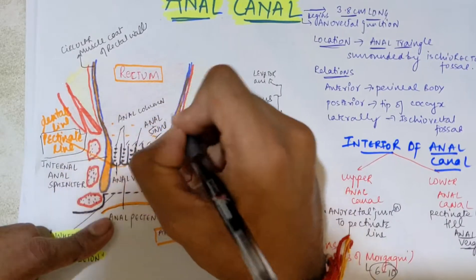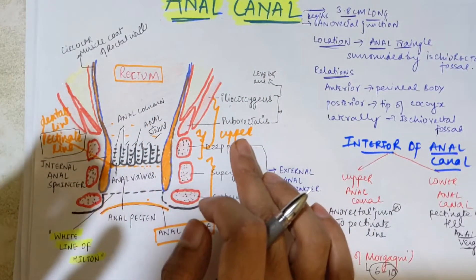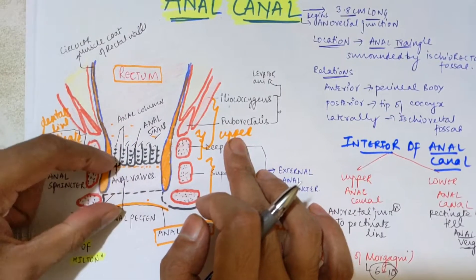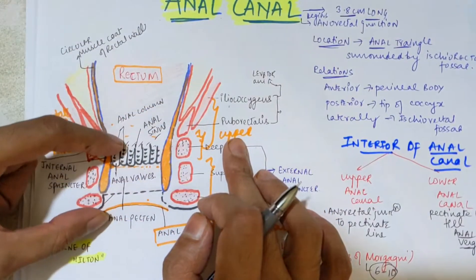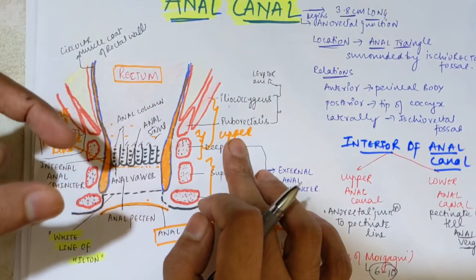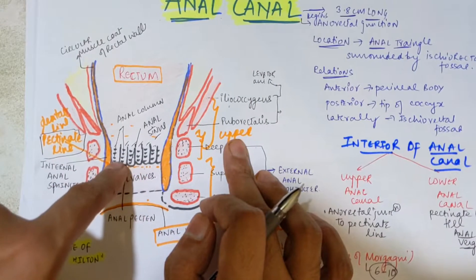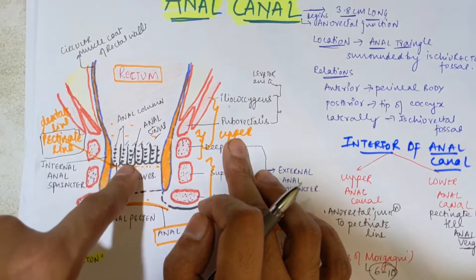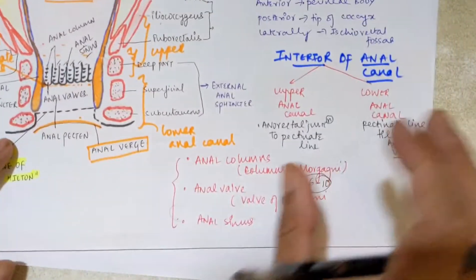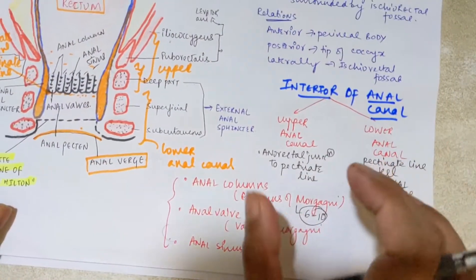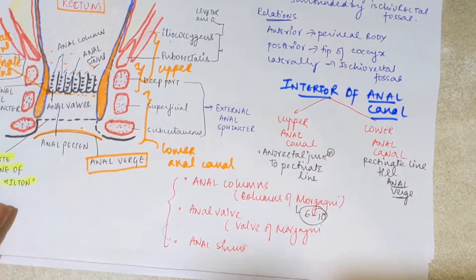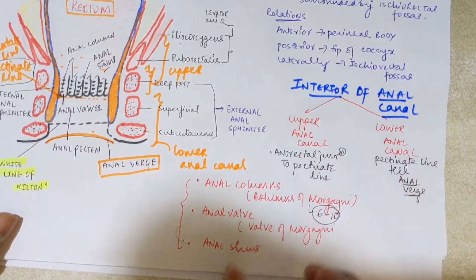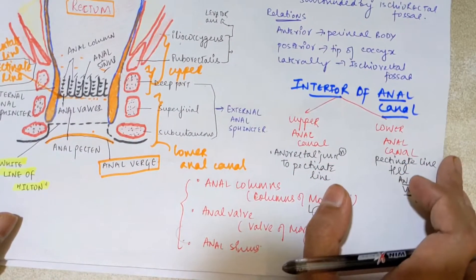An important point regarding the anal sinuses is that tubular anal glands, present in the submucous membrane of the anal canal, open into the anal sinuses. These three structures — anal columns, anal valves, and anal sinuses — are the main structures of the upper anal canal.